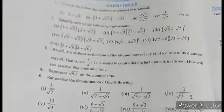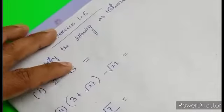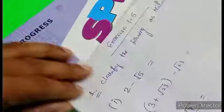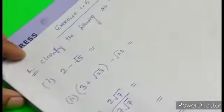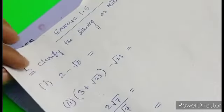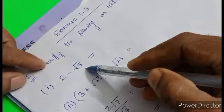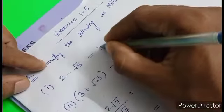We will classify the numbers one by one. Question number one: 2 minus root 5. Since root 5 is present, obviously we know this is an irrational number.